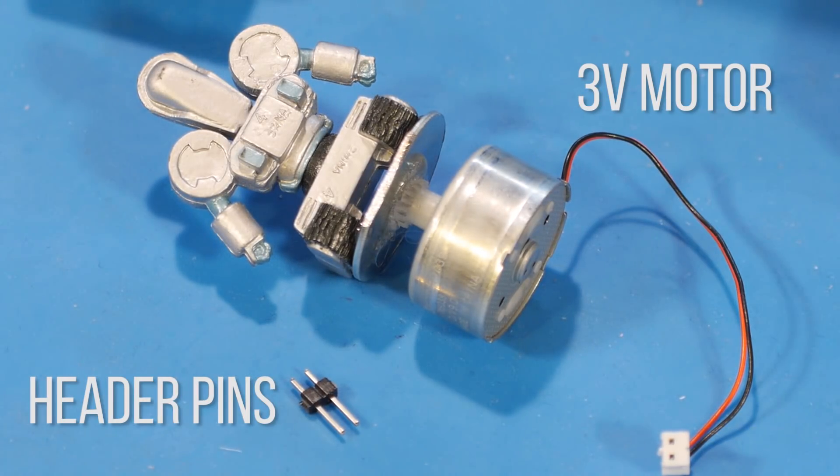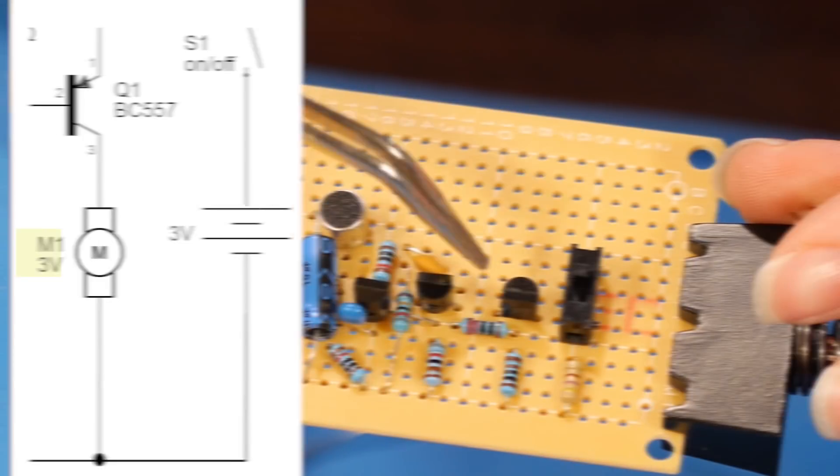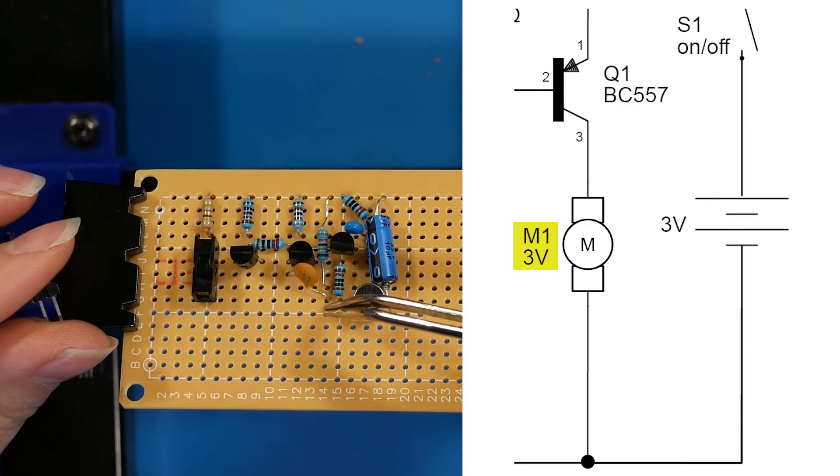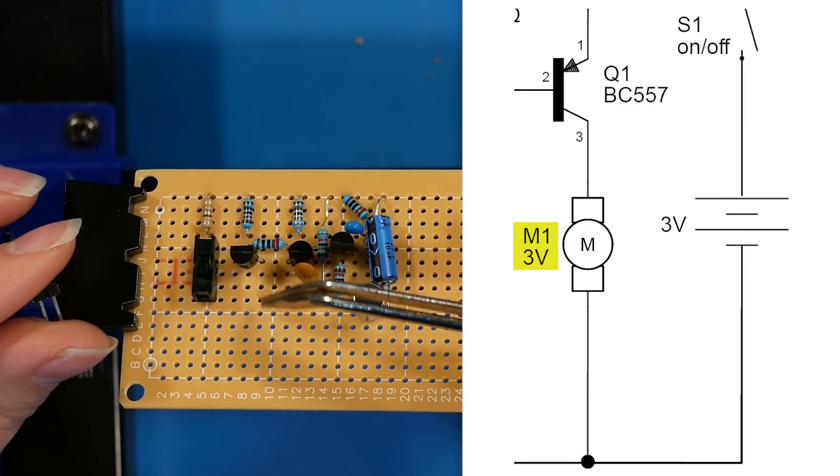We're going to add two header pins to connect our motor and one needs to connect to this pin here on Q1 and the other one to the ground plane, which is running under this white line here. So they're going to go here and here.